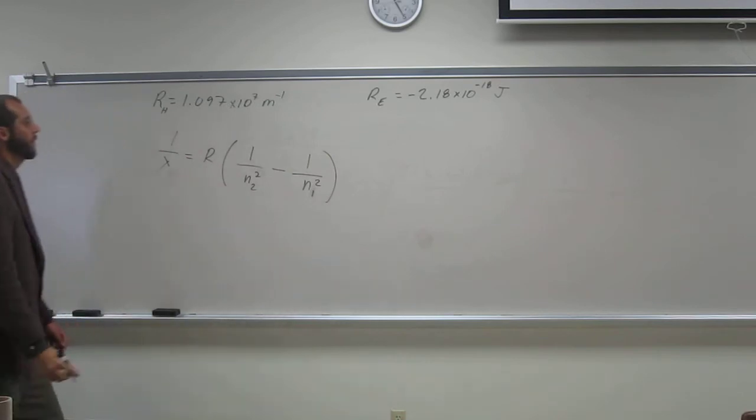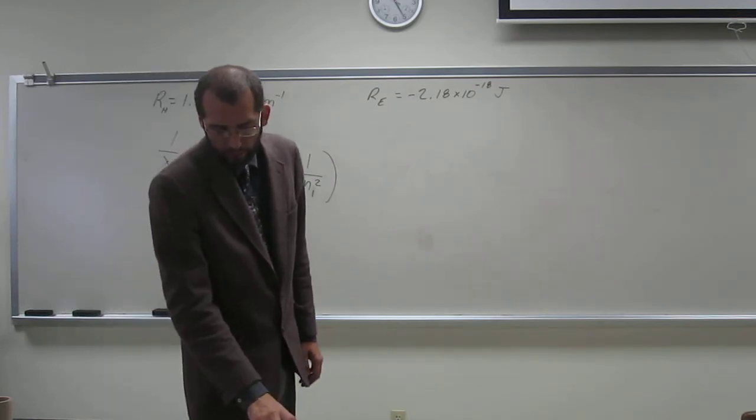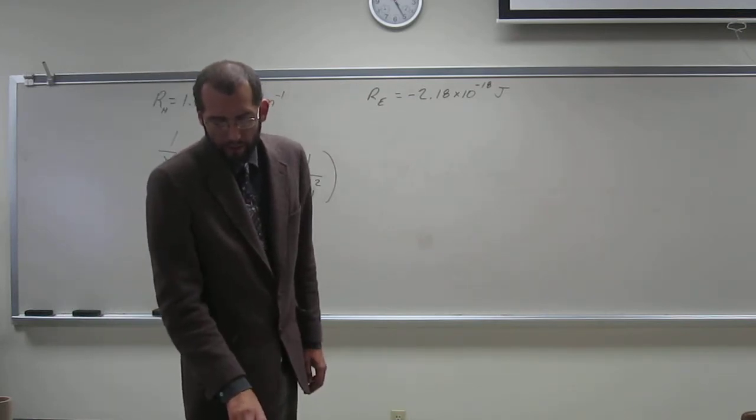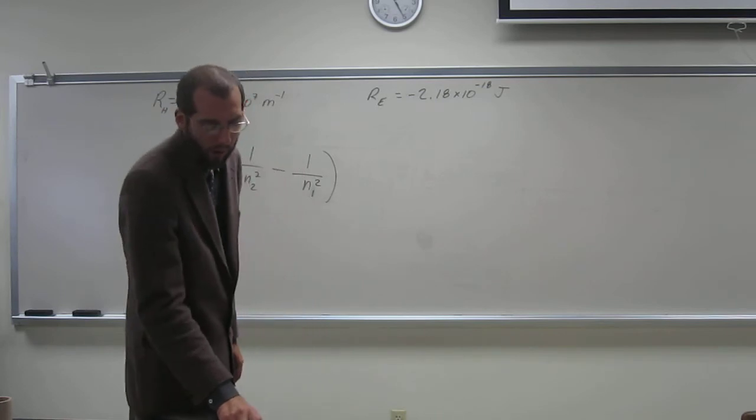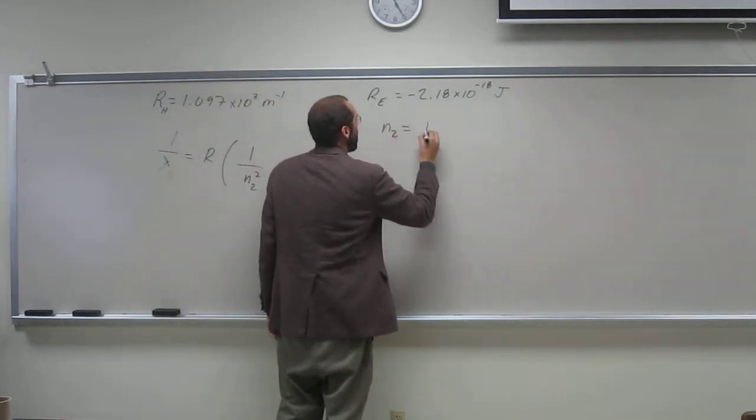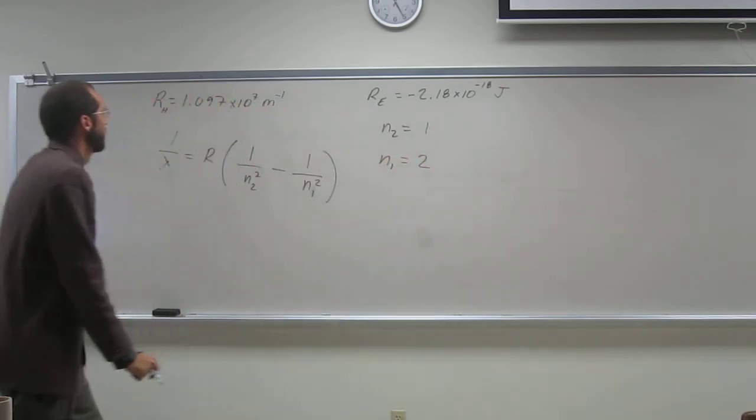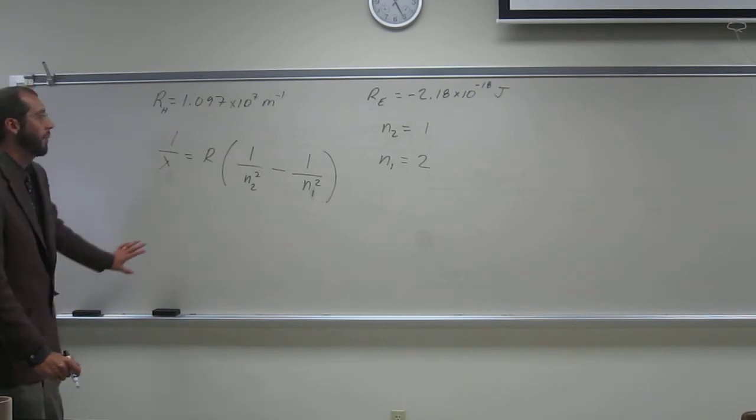Okay, so there's the Rydberg equation, and it tells us that... It says N2 is 1, and N1 is 2. Okay, so we should be able to figure out the wavelength.